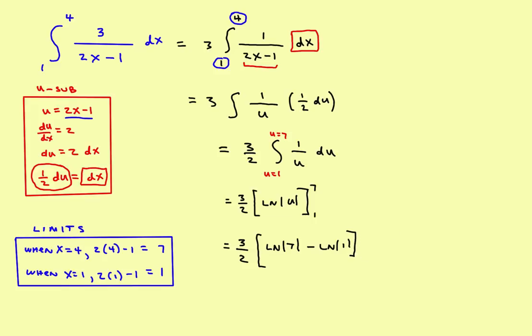But also a reminder, the natural log of 1 is 0, so this will actually turn into a 0 right here. And the final answer then would be 3 halves of the natural log of 7. And that's going to be the exact answer to the problem.